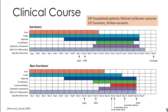In terms of the clinical course of COVID-19, a Lancet study of 191 hospitalized patients in Wuhan with known outcome looked at 137 survivors versus 54 non-survivors. Both groups had fever and cough at the beginning of their illness. Dyspnea came on in both groups around day 7. Sepsis came around day 9-10 and ARDS around day 10-12. ICU admission happened around day 12. In the group of non-survivors, mechanical ventilation occurred around day 15, and death usually around day 19. Survivors were discharged around day 22.